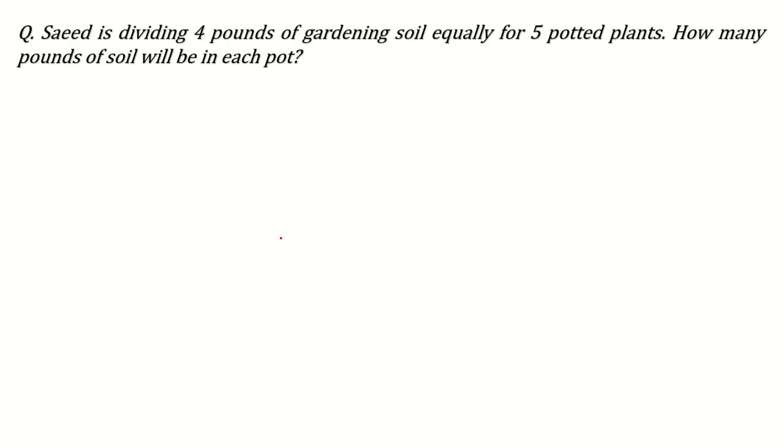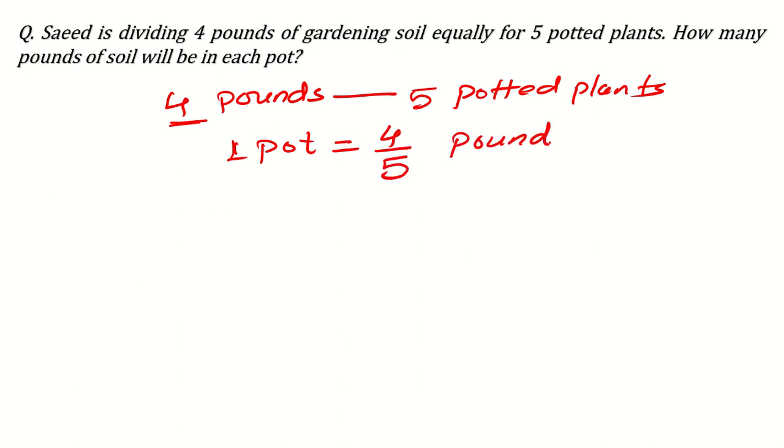Next question can be: Saeed is dividing 4 pounds of gardening soil equally for 5 potted plants. You see, 4 pounds and he is dividing equally in 5 potted plants. So how many pounds of soil will be in each pot? In 1 pot, how many? 5 potted plants, 4 pounds. So for 1 potted plant, it will be less. So it will be 4 over 5 pounds. Like this, you can do the simple relation. Now, this is also called unit ratio.